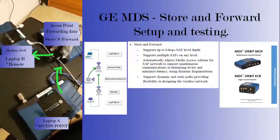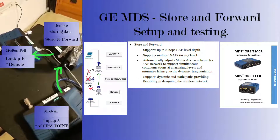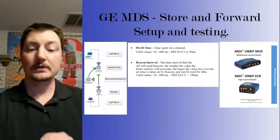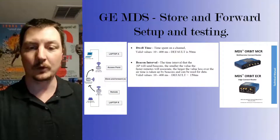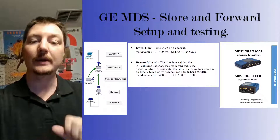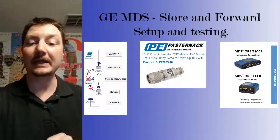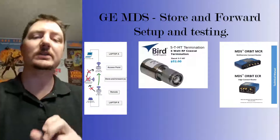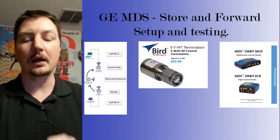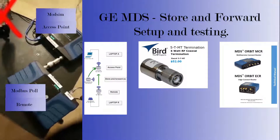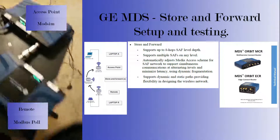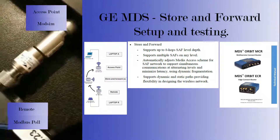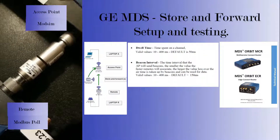We've got our access point talking Modbus through the store-and-forward to the remote, laptop to laptop. Now let's break it. Our first test is to remove power from the store-and-forward and simply allow the access point and the remote to shift their paths to communicate directly with one another. This does mean we'll need to move the remote closer to the AP, because those dummy loads are a little bit too strong. We're literally talking about milliamps at this point.